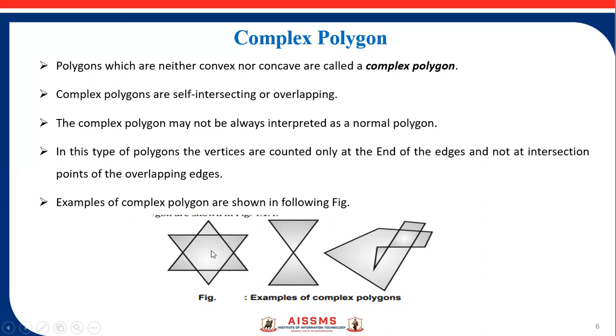This complex polygon may not always be interpreted as a normal polygon. In this type of polygon, the vertices are counted only at the end of the edges.